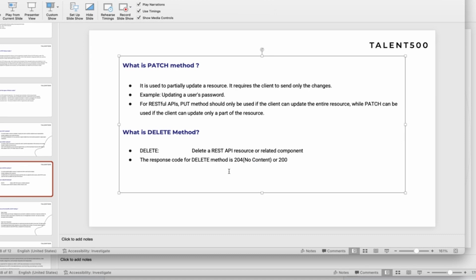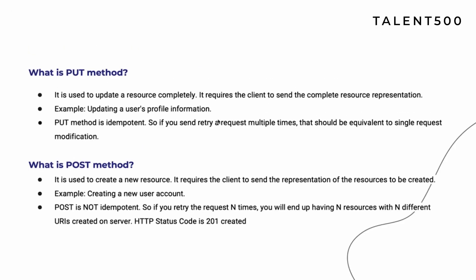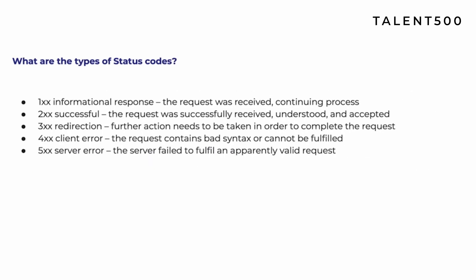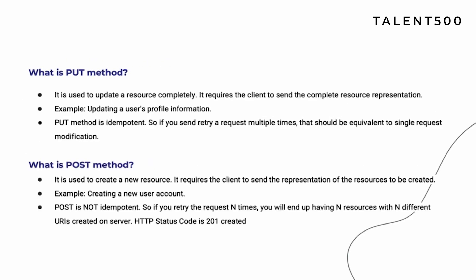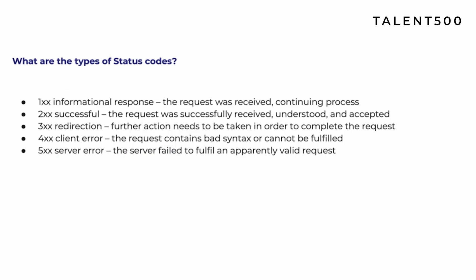The response code for DELETE is 204 No Content. This is very important to remember. So to recap what you should know: status codes, types of status codes, difference between PUT and PATCH, what is idempotency, what is the POST method, and the status code for DELETE — 204. These are the areas interviewers will definitely ask about.